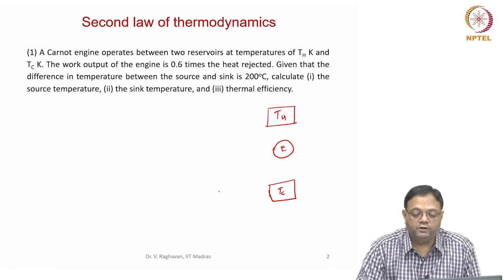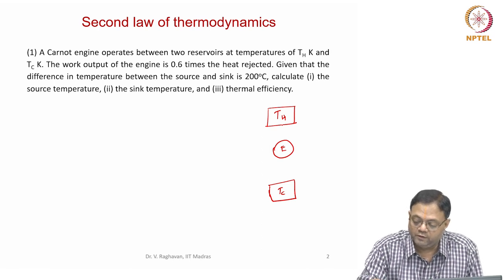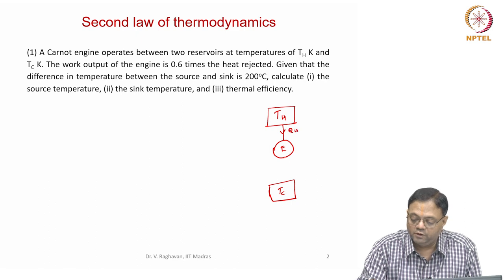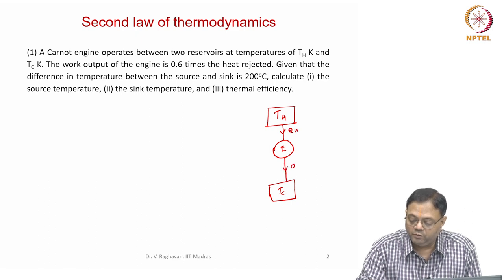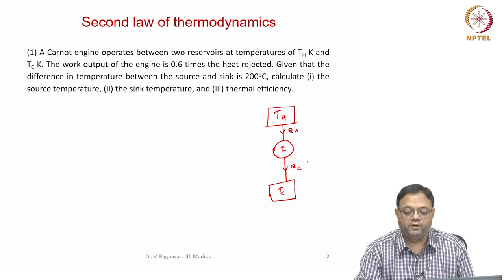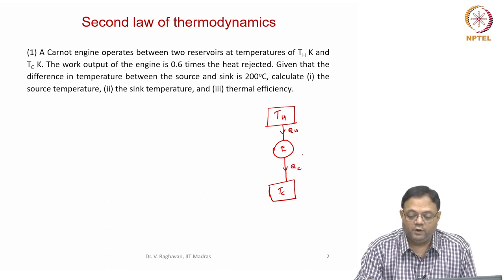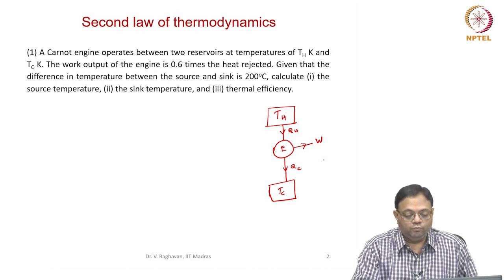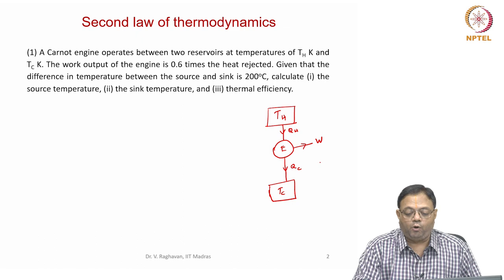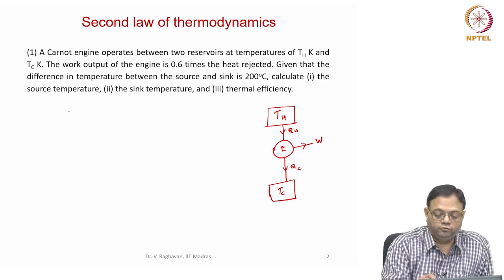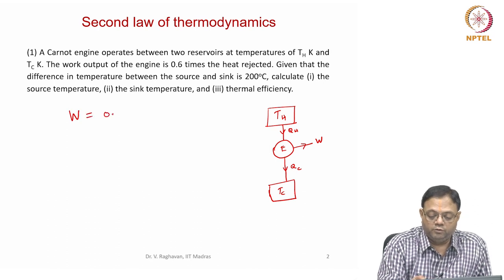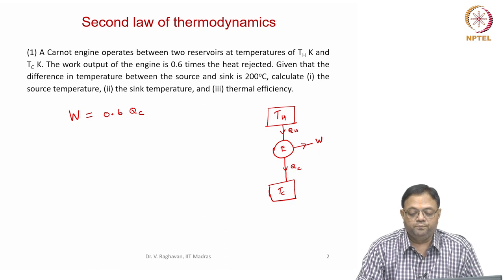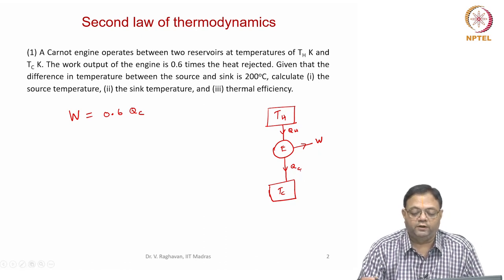The work output of the engine: it gets some heat QH, rejects some heat QC, and does some work W. The work output of the engine is 0.6 times the heat rejected. So we can say the work output W equals 0.6 times QC, where QC is in kilojoules per cycle.